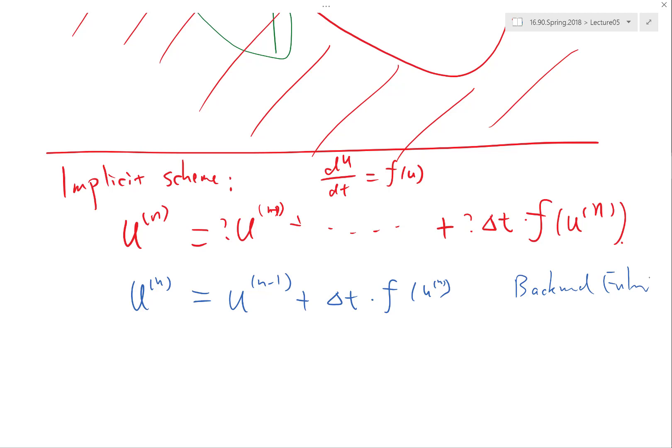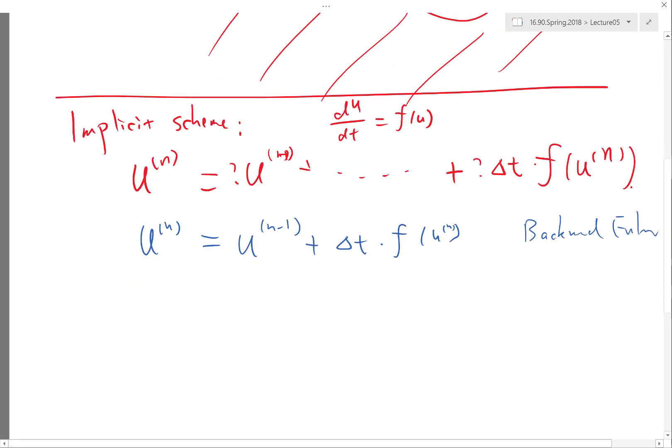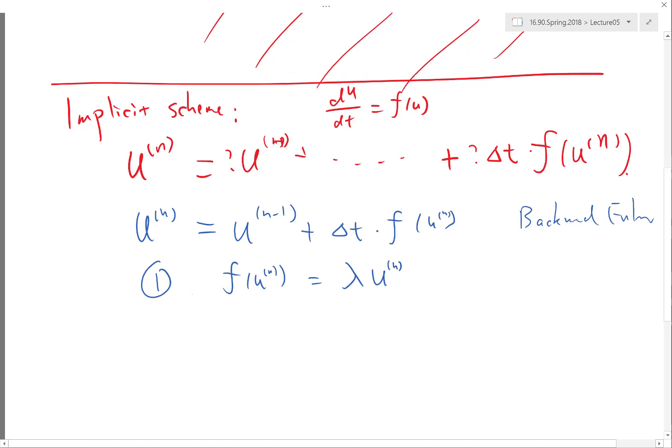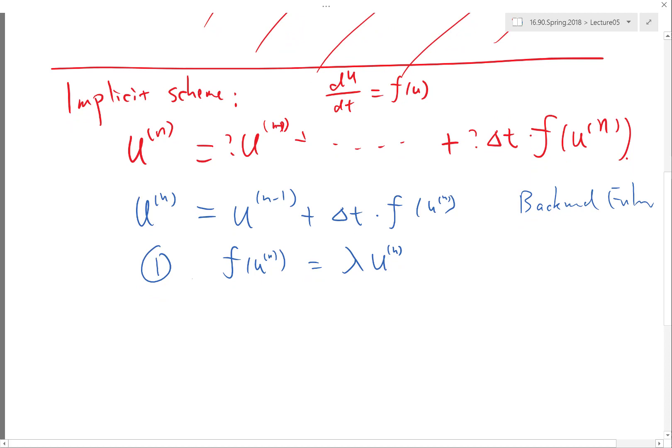It turns out there is first of all a very simple solution if f is a linear function. So let's say first case one: f(u^n) is equal to lambda times u^n. Very simple in that case.